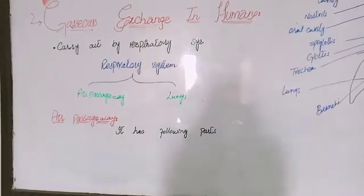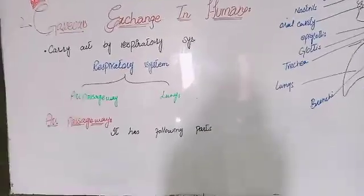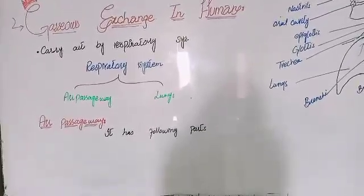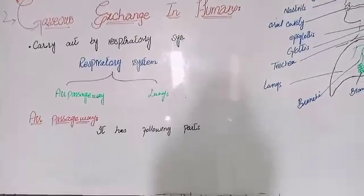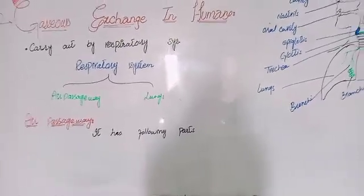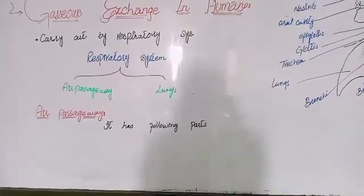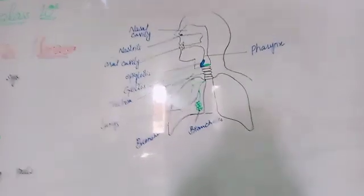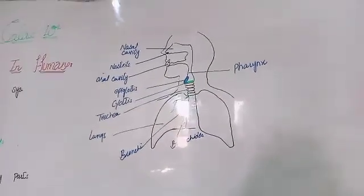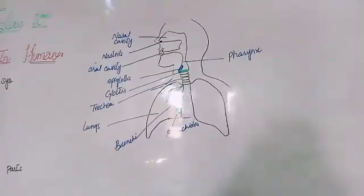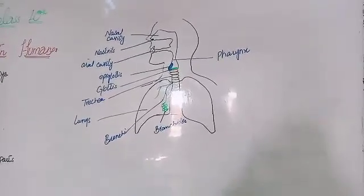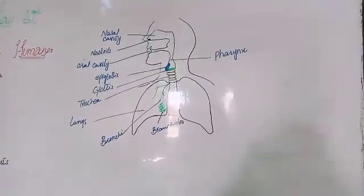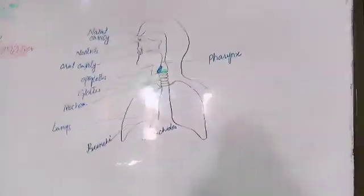So in the air passageway, we have the following parts. Now I have not written the theory in this way, because if you understand diagrammatically the air passageway, how the air flows, then you can write the theory in the form.